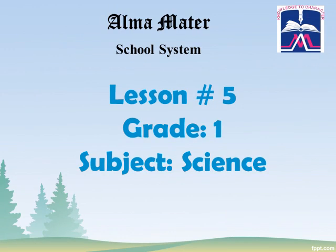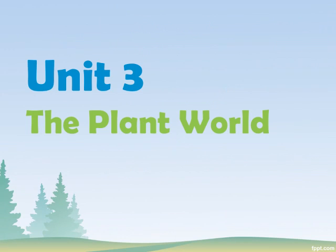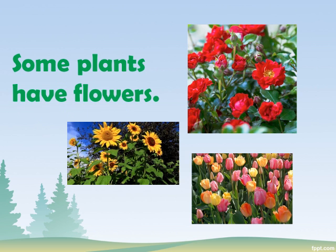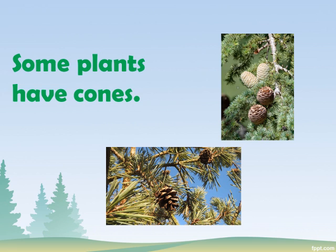Good morning kids, it's your fifth science class. Today we will start unit number three: The Plant World. The topic is types of plants. Some plants have flowers — all these are flowering plants: roses, tulips, sunflower.